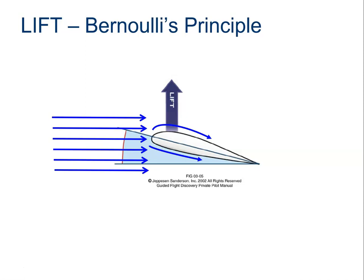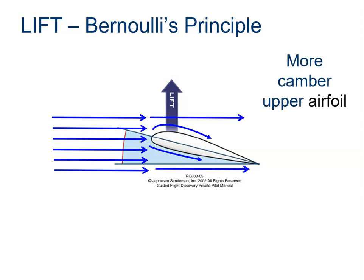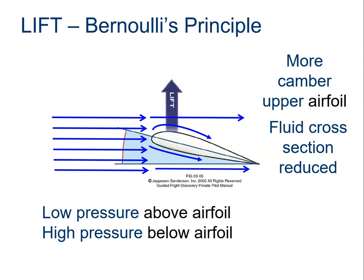Applying Bernoulli to an airfoil: the upper surface has more camber or curvature, so the fluid cross-section is effectively reduced. Think of two air particles meeting at the front of the airfoil — to conserve energy they must meet again at the trailing edge, but the particle traveling over the top has to go farther in the same time, so it must go faster. Faster flow means lower pressure, so there is low pressure above and high pressure below — and that creates lift.